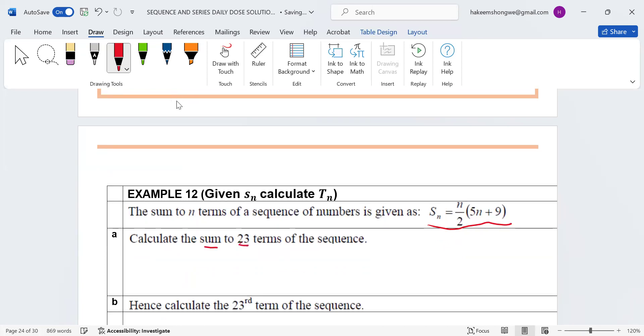What does that mean? It means everywhere the learner sees n, they're going to put 23. So everywhere you see n, you can come and substitute 23. If I say I want S23, I mean everywhere you see n, you can come and substitute, and then you're going to have 23 over 2, 5 multiplied by 23 plus 9.